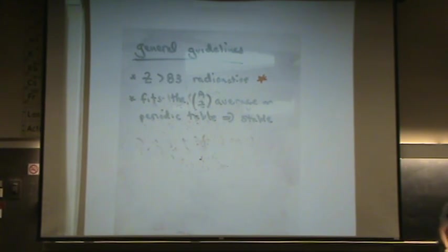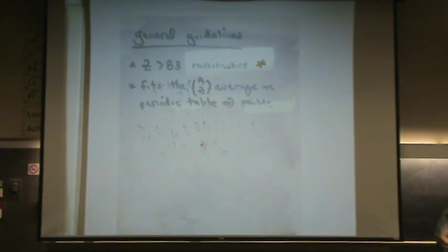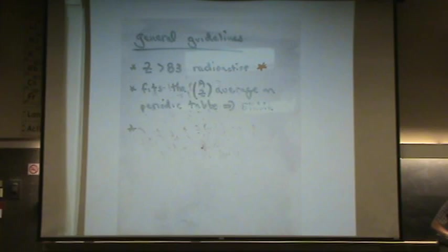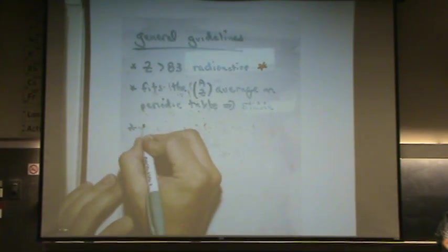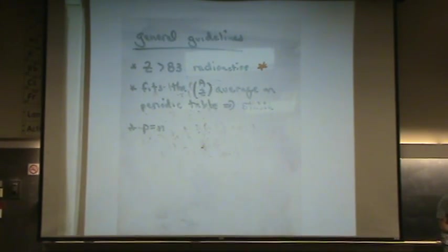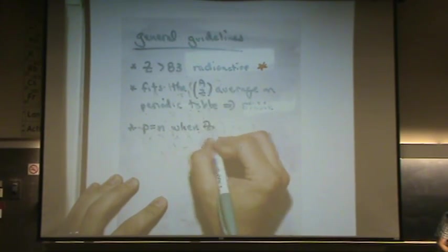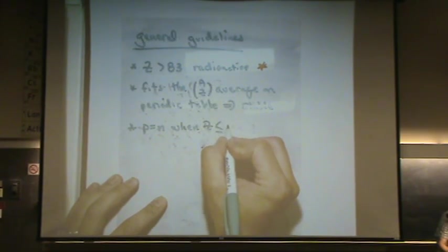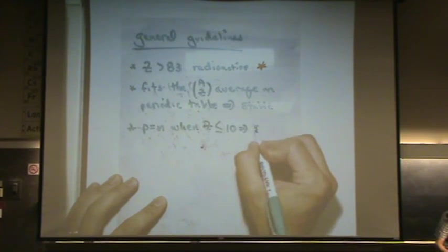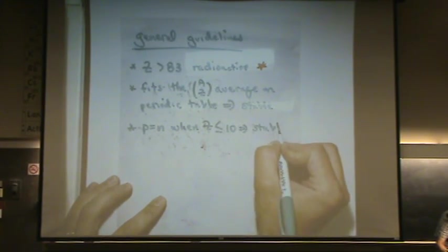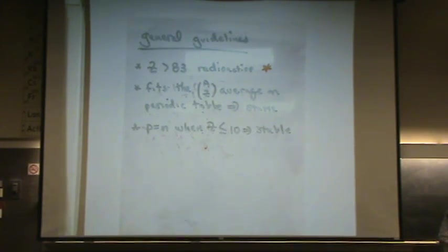Let's go to the next one, next general guideline. So no red star by this one because you can't take that one to the bank. If protons equal neutrons when Z is less than or equal to 10, it's stable. First let me explain that.